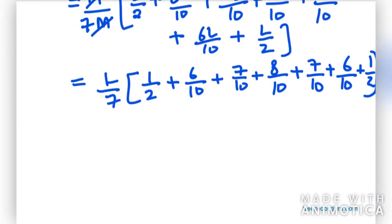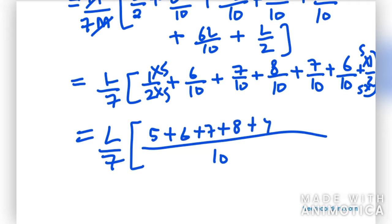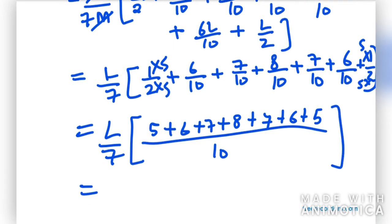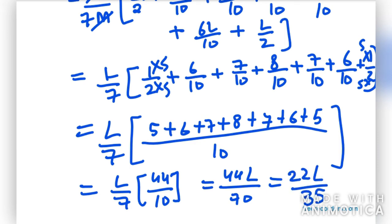Taking LCM again, we get L/7. Taking 10 as common denominator, we multiply 1/2 by 5 for both the first and last terms. So this gives: 5 + 6 + 7 + 8 + 7 + 6 + 5 = 44. So the answer is L/7 times 44/10, which simplifies to 44L/70, or written more simply as 22L/35. So this is the answer for this question.